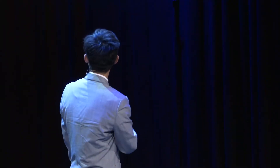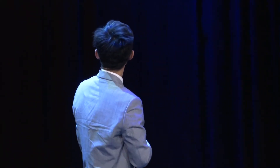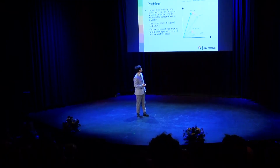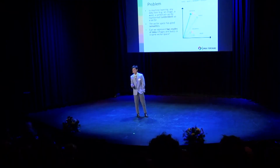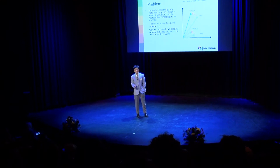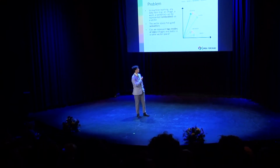My question is: can we extend this to two modes of data, such as images and text, such that they can be represented in this vector space with aligned meanings?